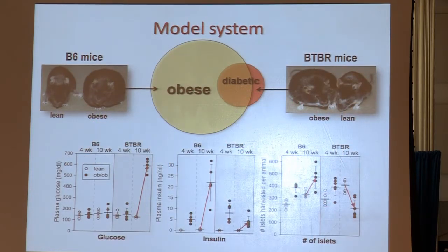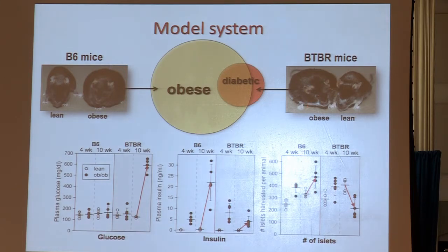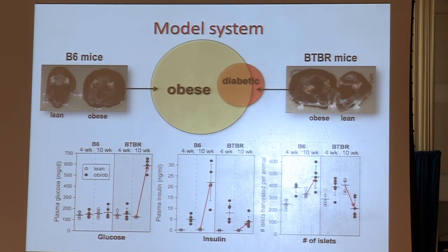We model this dichotomy in two mouse strains. Over here are Black 6 mice — the canonical mouse strain that virtually everybody uses. And over here are BTBR mice. We can make both mice equally obese by deleting leptin, a hormone that controls appetite, so leptin-deficient mice spend their entire day eating. Despite morbid obesity, the Black 6 mouse never becomes diabetic, whereas the BTBR mouse always becomes diabetic. With these two strains we've separated obesity from diabetes, thinking of BTBR as genetically predisposed to develop diabetes in response to obesity.